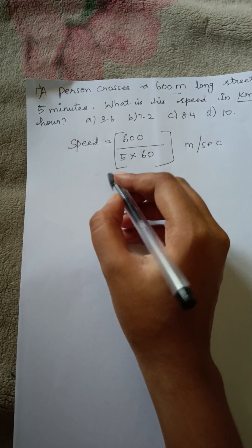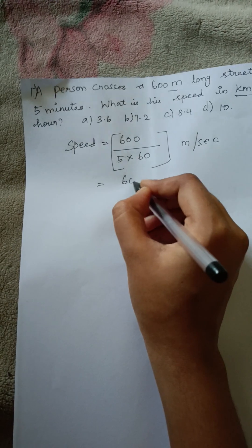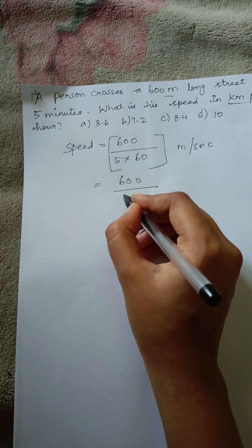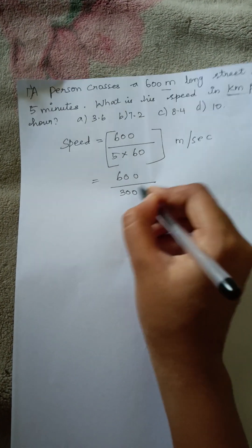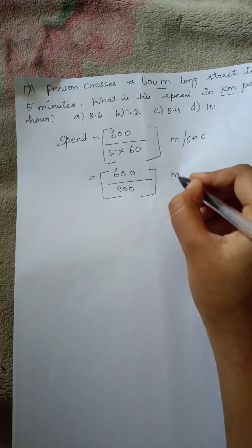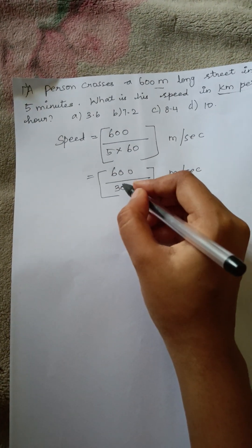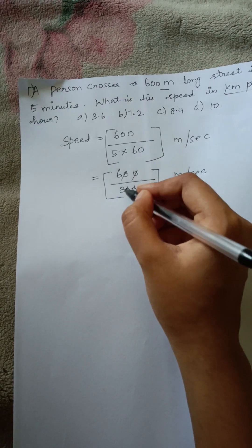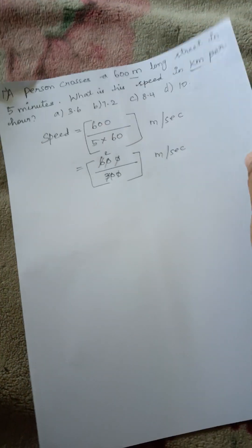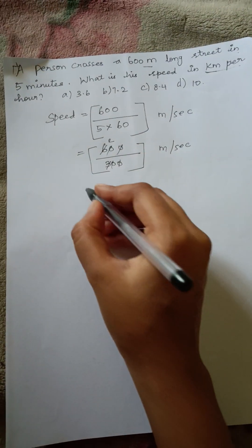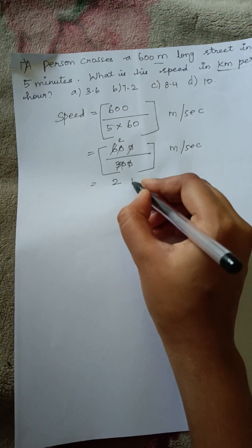We need to solve this: 600 divided by 5 into 60 is 600 divided by 300, which equals 2. So the answer for the speed is 2 meter per second. This is the speed.